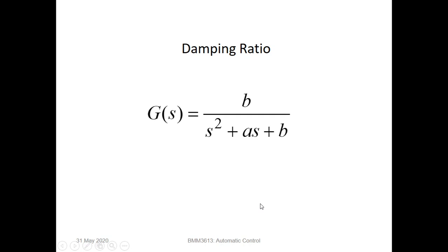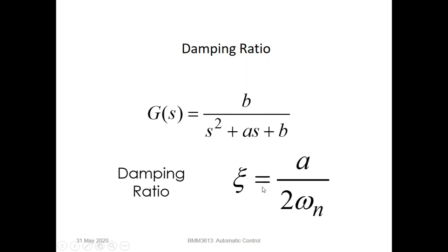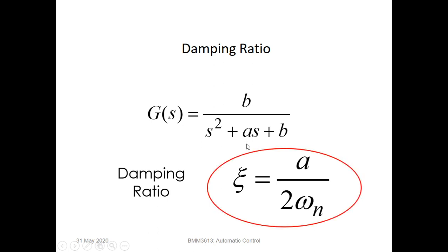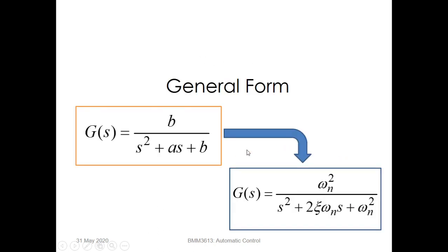The second quantity is damping ratio, which can be determined using this formula: a divided by 2 times omega-n, where a is obtained from the transfer function. The general form of the transfer function G(s) can then be written in terms of natural frequency and damping ratio.